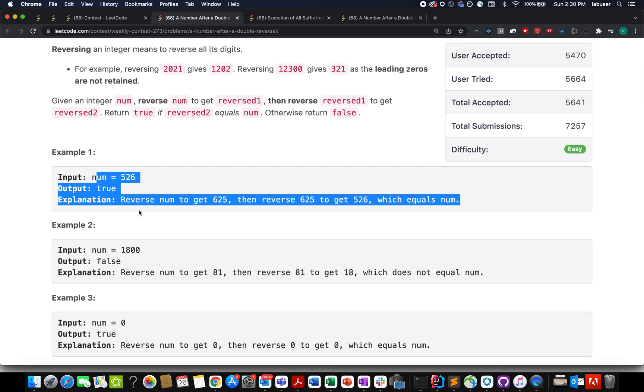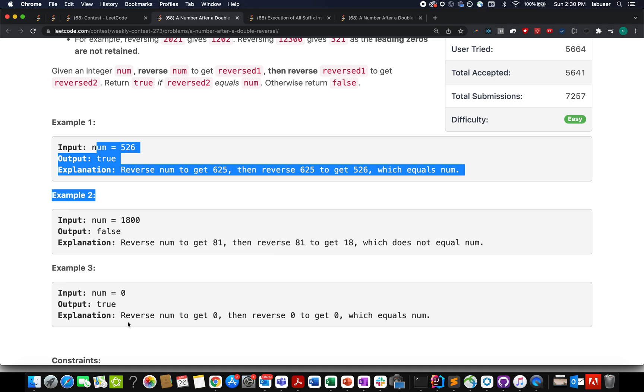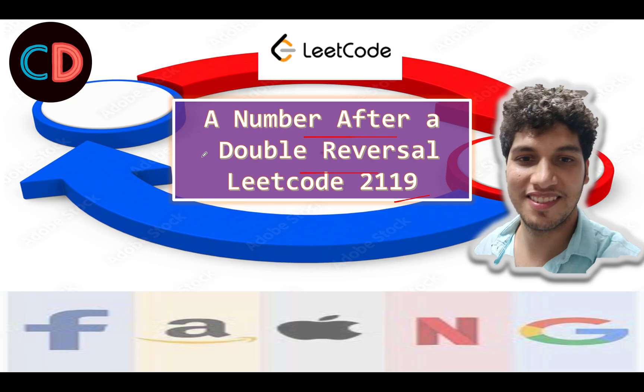Here we have also specified a few examples. Num is 526, num is 1800, num is 0. So I'll talk about the solution as well as these examples by the PPT. So let's quickly move on to the PPT. The question is an easy level question on LeetCode and I also feel the same. A number after double reversal, LeetCode 2119.